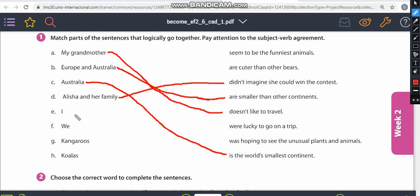So letter E. I, so if it's I, I can't use this one or are or were. So the only thing I can use is I was hoping to see the unusual plants and animals. Because verb to be in the singular form in the past is was, not were. So I was hoping to see the unusual plants and animals.